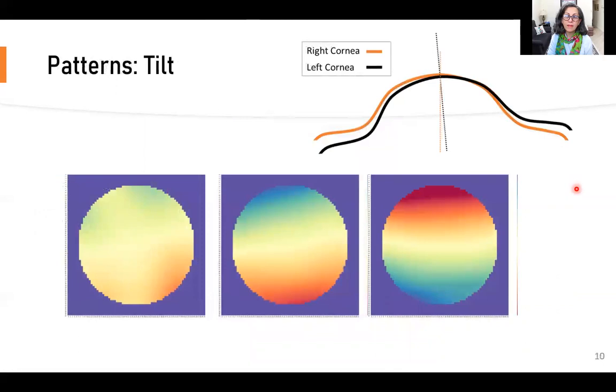Another pattern is tilt. In these cases, there were negative values on one side and positive ones on the other. This pattern indicates a difference in the imaging axis between fellow eyes and one eye is off-axis.